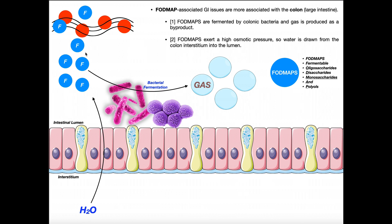That's the mechanism of FODMAP-associated GI issues. It's non-immunological — it's really just operating based on the bacteria present and the physics: water moves toward the higher osmotic pressure provided by those FODMAPs. The confusion lies in the fact that a lot of foods containing gluten also have FODMAPs — they tend to come together as a pair, like Batman and Robin.